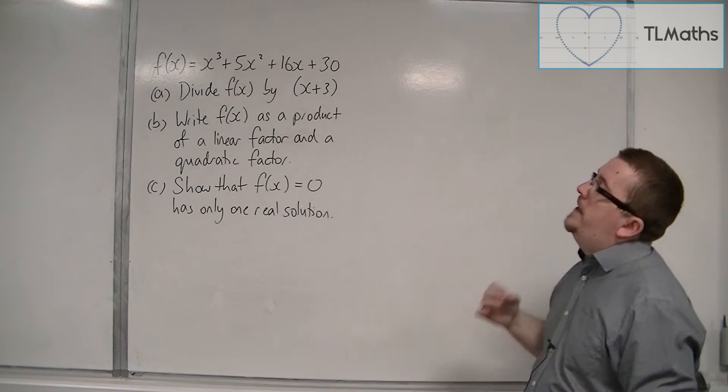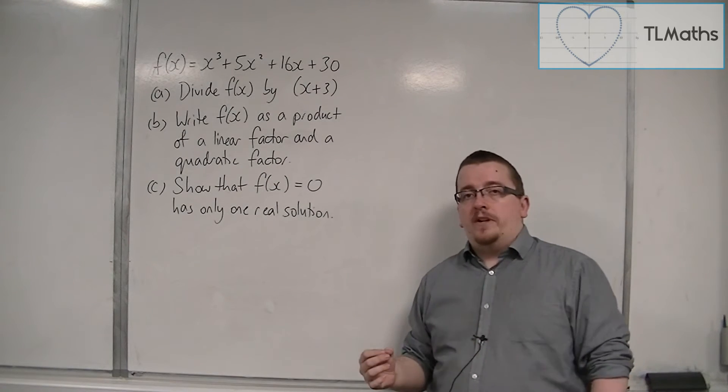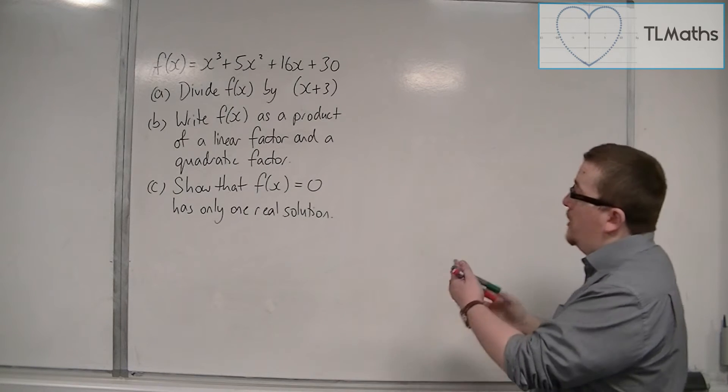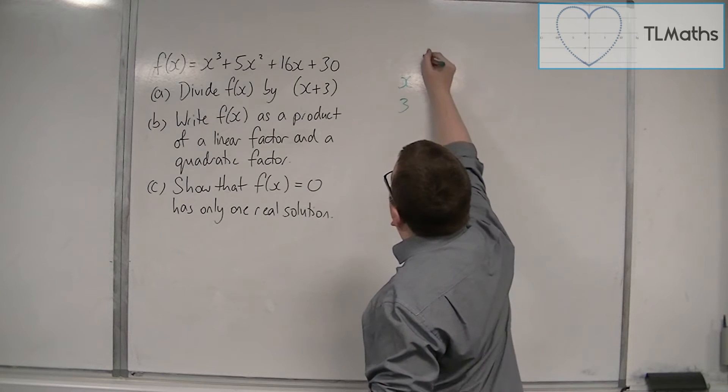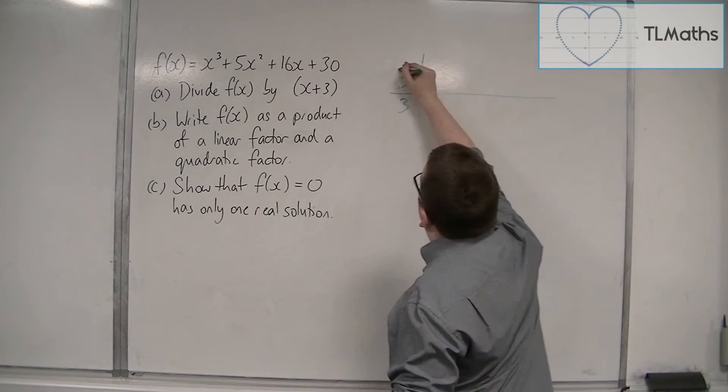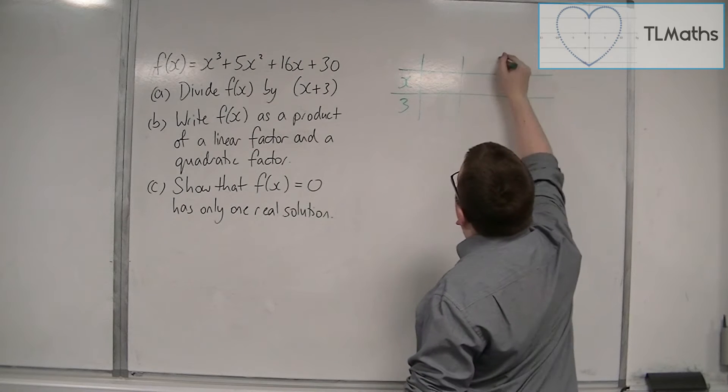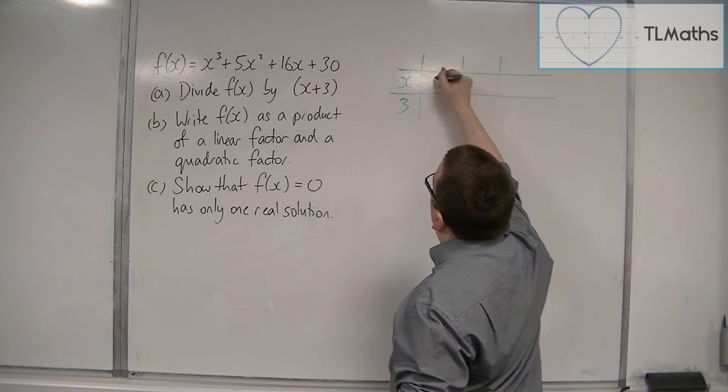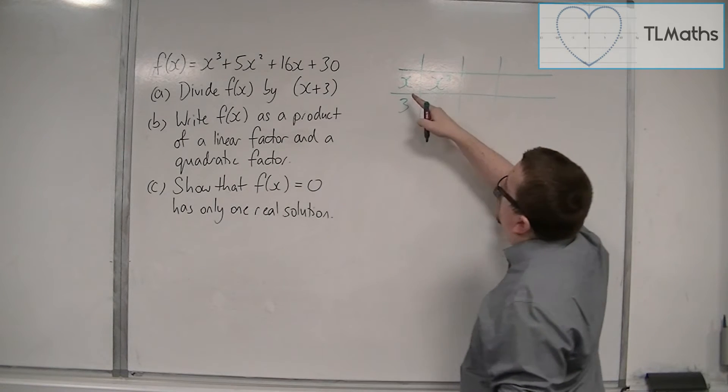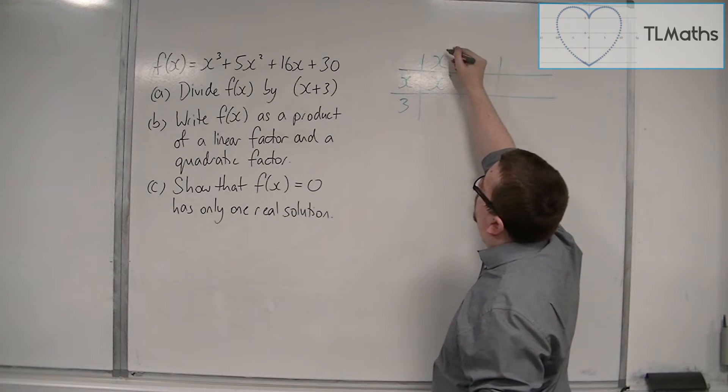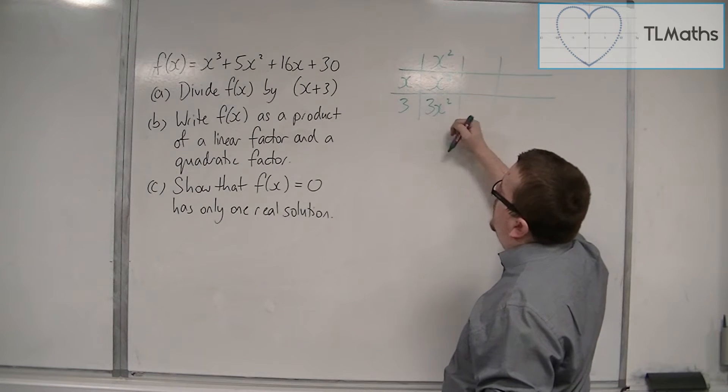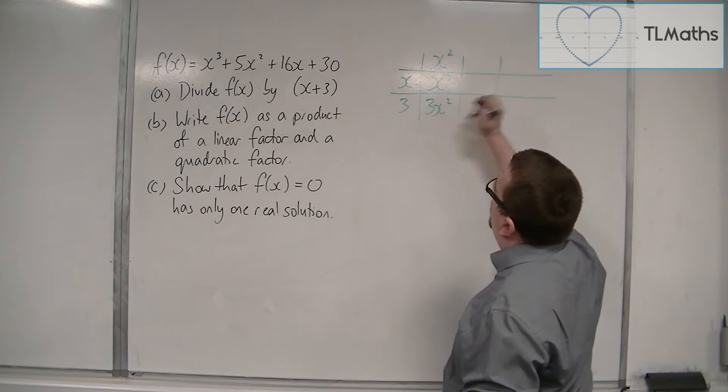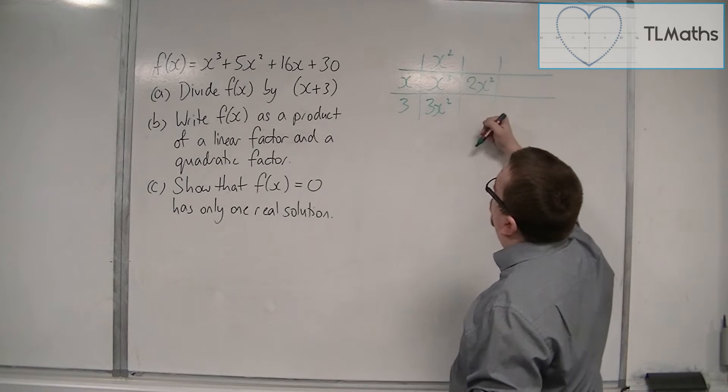Part A: divide f(x) by (x+3). We're going to use polynomial division for this. I write x+3 on the left-hand side. I want x³, so I multiply x by x² to get x³. x² times 3 is 3x². Now I don't want 3x², I want 5x², so I'm going to add on 2x².